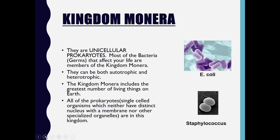Coming to each kingdom one by one — first, Kingdom Monera. All organisms here are unicellular and prokaryotes, meaning single-celled organisms which neither have a distinct nucleus with a membrane nor specialized organelles. Most bacteria which affect our life come under Kingdom Monera. They can be autotrophic or heterotrophic. This kingdom includes the greatest number of living beings on Earth.